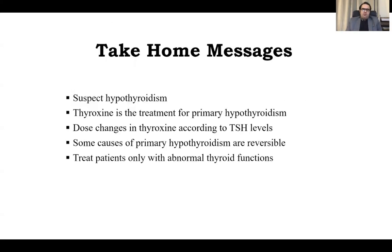Take-home message: suspect hypothyroidism. Thyroxine is the treatment for primary hypothyroid. Adjust the dose of thyroxine according to TSH levels. Some causes of primary hypothyroidism are reversible. Treat patients only with abnormal thyroid function. Thank you so much.